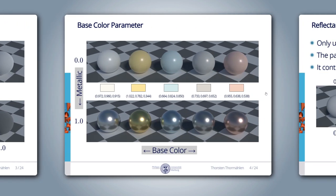Another parameter is called base color. It is an RGB vector. For dielectrics, it contains the RGB values for the albedo, which is the amount of diffuse reflection in the interval from 0 to 1. For metals, this parameter contains the RGB values for the Fresnel reflectance, which will be introduced in a minute.